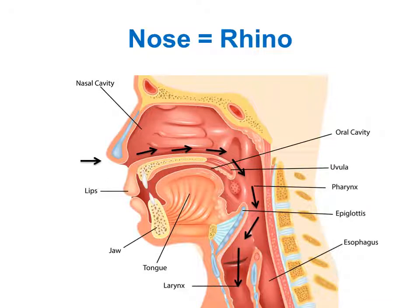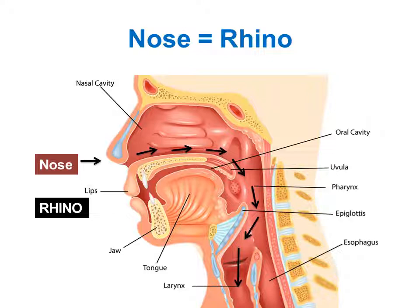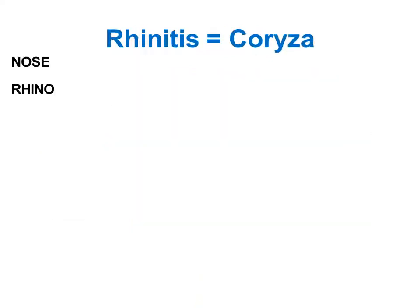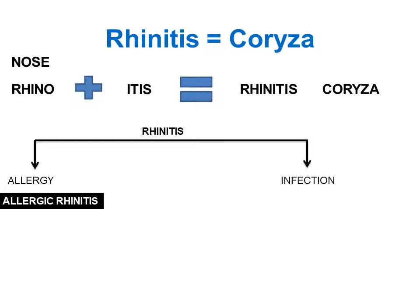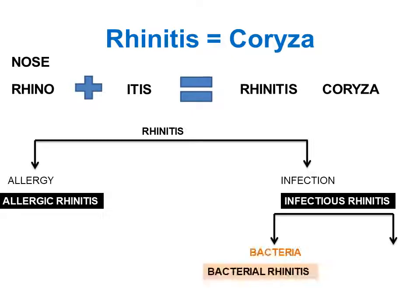Nose is also called as 'rhino' in Greek language. We all know about the rhinoceros, which is named so because of the horn on the nose — so easy to remember. Rhino means nose. Inflammation is denoted by the suffix -itis, so inflammation of the nose is called rhinitis. Rhinitis is also known as coryza. If rhinitis is caused by allergens, it is called allergic rhinitis. If rhinitis is due to infection, it is called infectious rhinitis. Infectious rhinitis caused by virus is very common and is also called the common cold, or viral rhinitis.